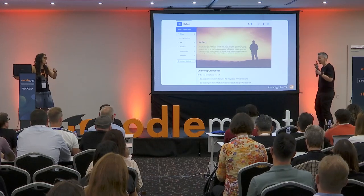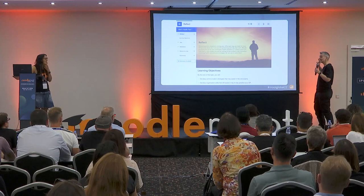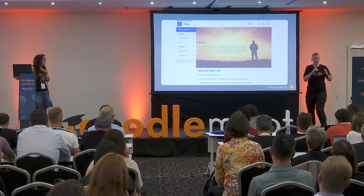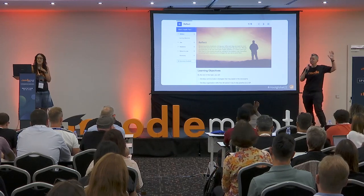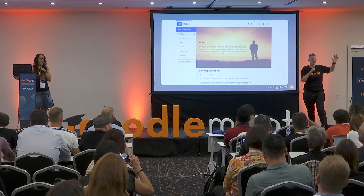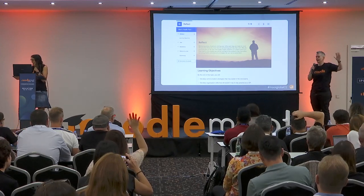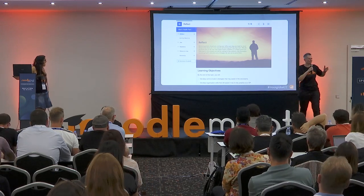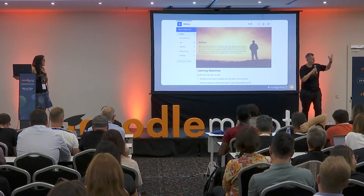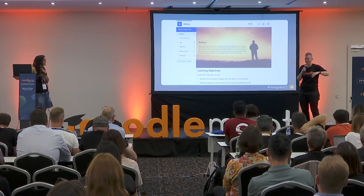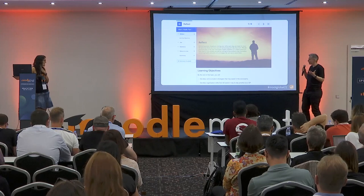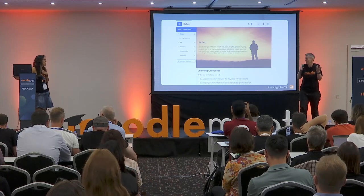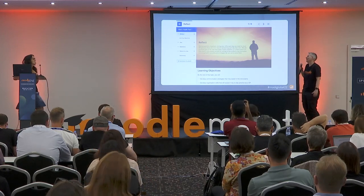Interactive book with course presentation. So in the interactive book, you've got lots of content types — there's a text one and an image one and stuff — but it puts it one after the other. If you want a bit more control, course presentation means you can put it together however you like.